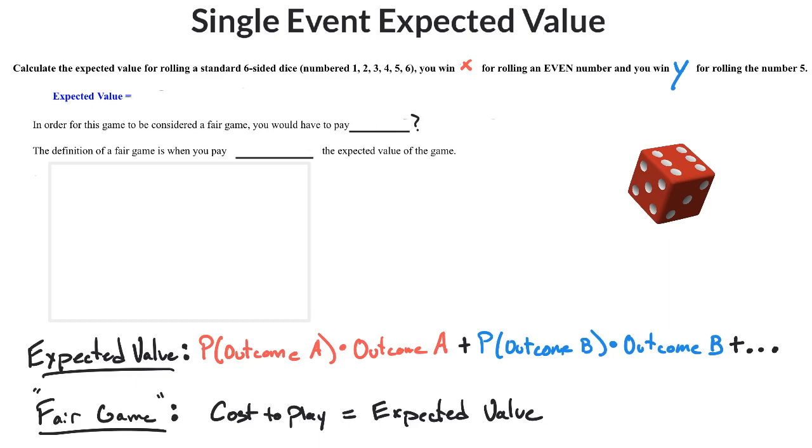Expected value is used when you are getting something out of what occurs in a game. Here we're winning dollars; it could be winning points or scores or something like that, but most of the time for the work we do, it's going to be working with dollars. I did not fill those in here; you can fill those in with your own particular values, but the point remains the same.